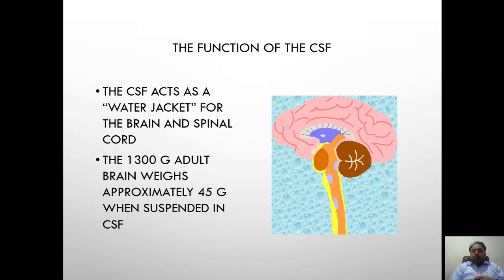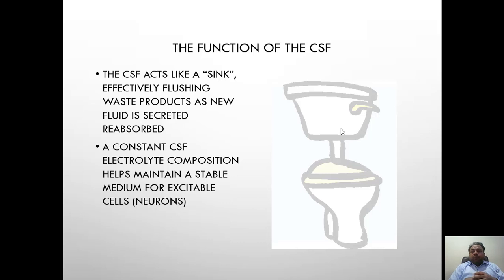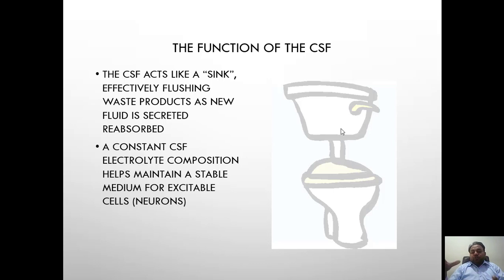CSF has two major functions. One is the water jacket — it acts as a water jacket, meaning that an adult brain weighs about 1300 grams, but due to the brain suspending in a water-like fluid that is CSF, its effective weight is only 45 grams. About 450 ml of CSF is produced daily and the adult brain contains only 150 ml, meaning that 300 ml of CSF is reabsorbed daily into the circulation, and this reabsorption also effectively flushes waste products along with it.